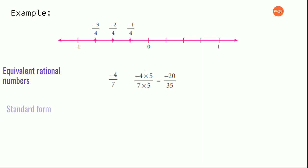Now the next one is standard form. Standard form means the common multiple should be only 1 — no other common multiple should be there. For that, you are going to cancel it out and write the simplified term as the answer. That is the standard form of a number.